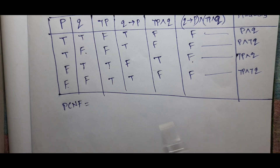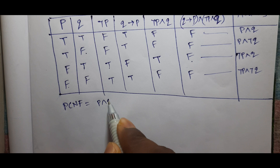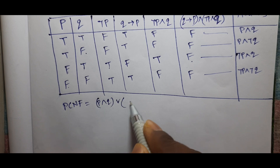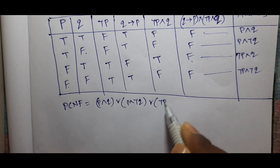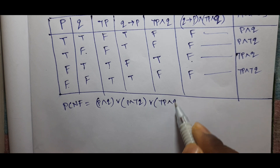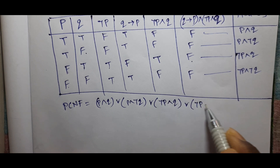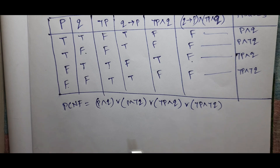By using the value of PCNF, if you consider: Q, R; P and negation Q, R; negation P and Q, R; negation P and negation Q.